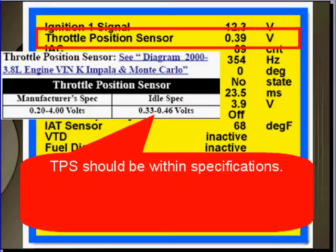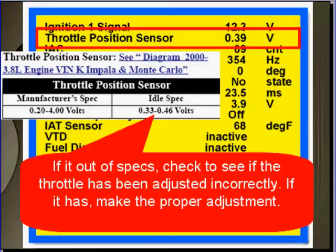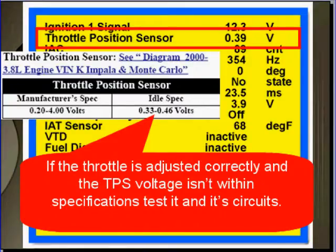Look at the TPS. It should be within specifications. If it isn't, check to see if the throttle has been adjusted incorrectly. If it has, make the proper adjustment. If the throttle is adjusted correctly and the TPS voltage isn't within specification, test it and its control circuits.